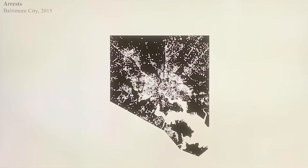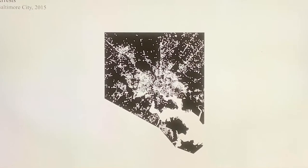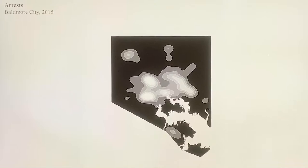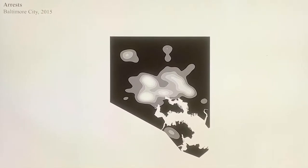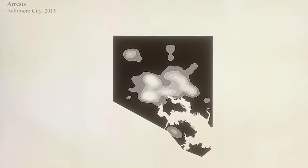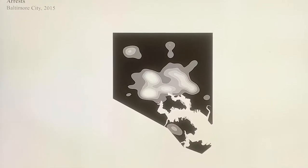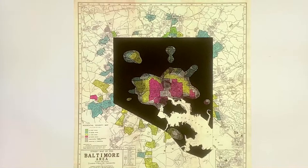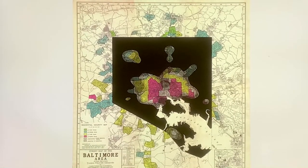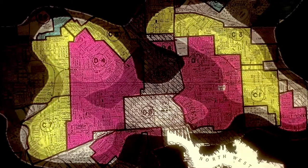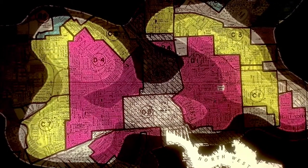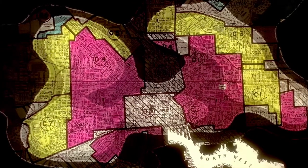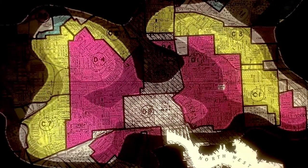A map of arrests in Baltimore City during 2015, graded for density. Transparent areas indicate regions with the highest concentration of arrests. The same map is layered over the 1937 residential security map of Baltimore City limits. Red, yellow, and diagonally shaded areas indicate neighborhoods deemed the highest financial risk by the Homeowners Loan Corporation nearly 80 years ago.